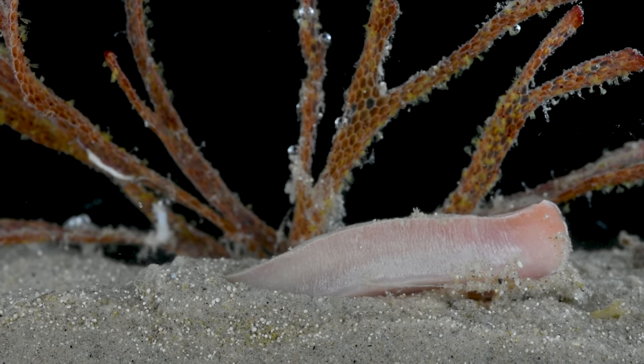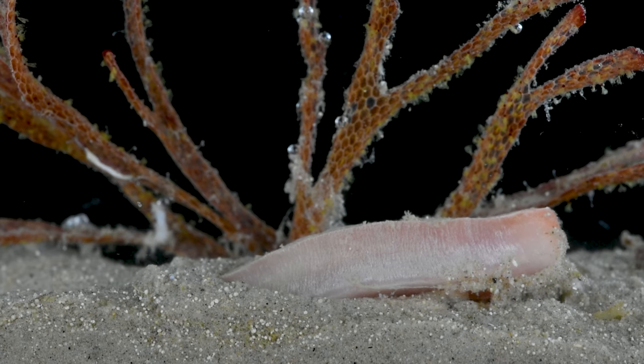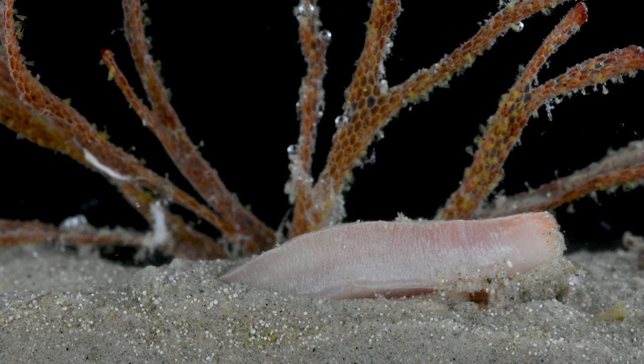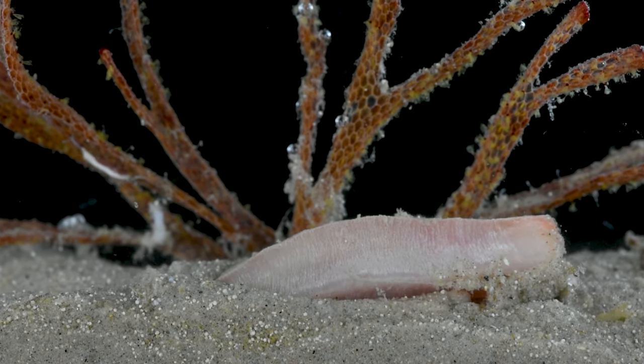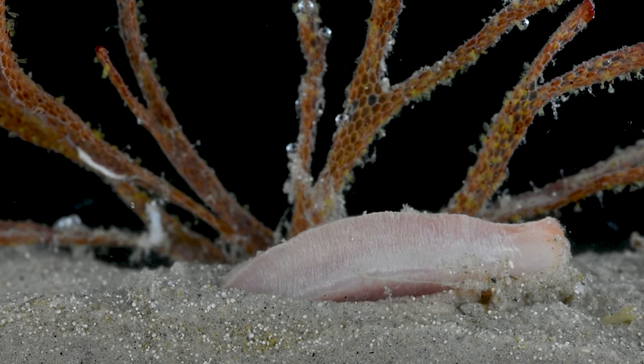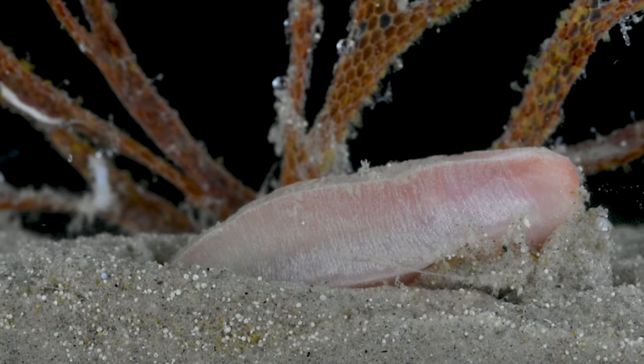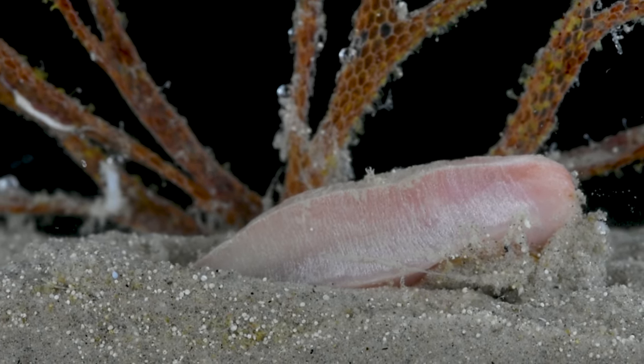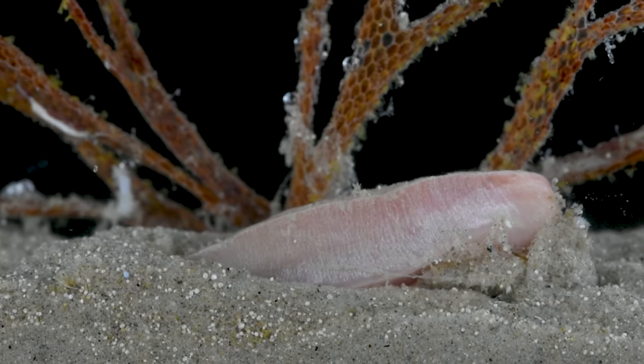The solenogaster seems close to finding its prey. The anemones that they hunt will pull their bodies beneath the sand when they detect danger. That's no problem for this Neomenia as it pushes its head into the sand and begins to burrow. In slow, shoveling motions, it digs deeper and deeper in search of the anemone.